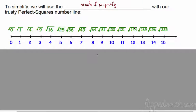What steps are we going to use? We're going to write them down. First, to simplify, we use the product property — two factors multiply to whatever's under the radical and you can separate them. The first thing we need is a perfect squares number line. So 0 times 0 is 0, 1 times 1 is 1, 2 times 2 is 4, 3 times 3 is 9, 4 times 4 is 16. You would be surprised how many students want this number line because they cannot recreate it — it is just the number on the bottom times itself. 7 times 7 is 49, and so on.